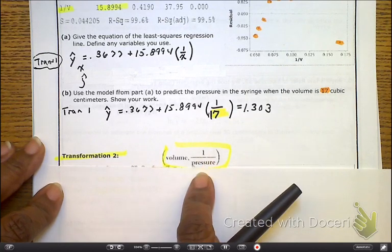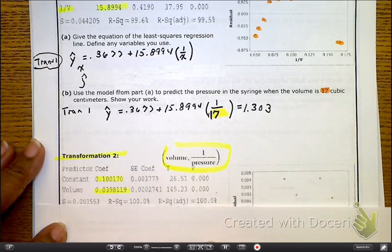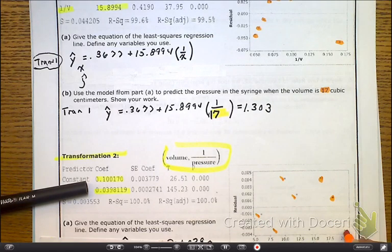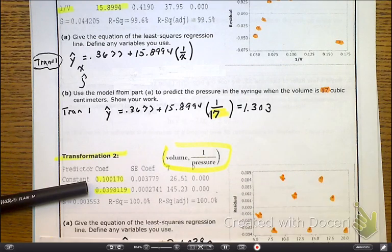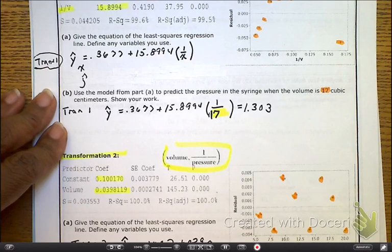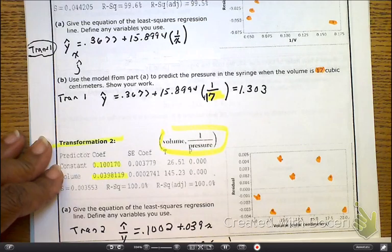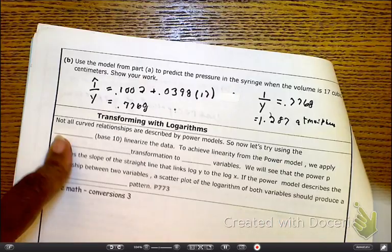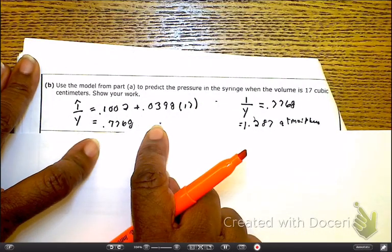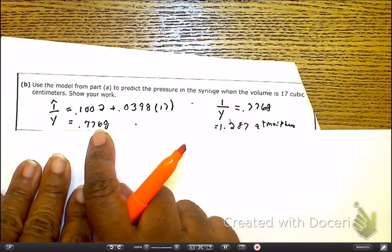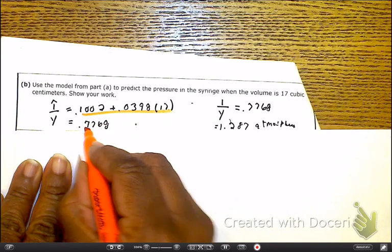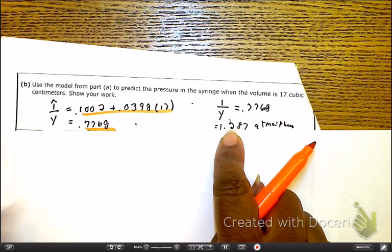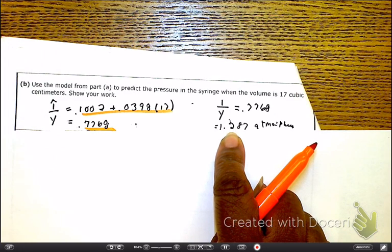Now for transformation 2, we have our volume versus our pressure, 1 over our pressure. Here is our printout. Look at this residual, this residual is much better. Now here we're going to use this equation. They said the same premise, they want us to make the prediction on 17. We have the equation, we plug it in. Now as we have this, we've got to solve for y after we've found this value. Do the math, but now we still haven't solved for y. You have to cross multiply, and once you cross multiply, you get to the 1.287 atmospheres.